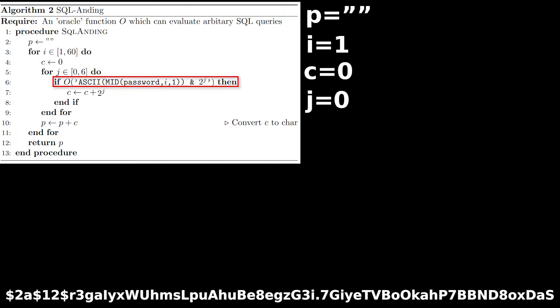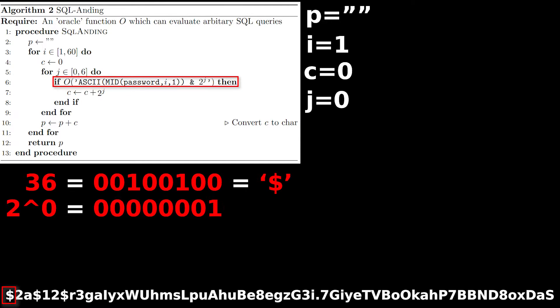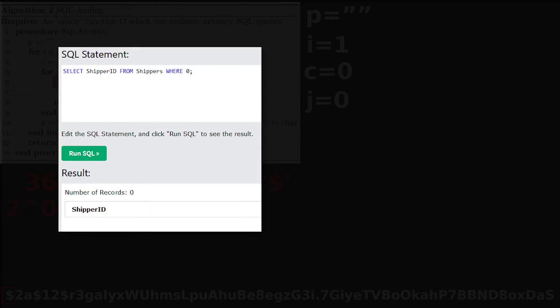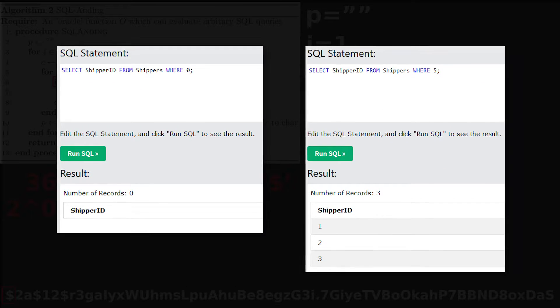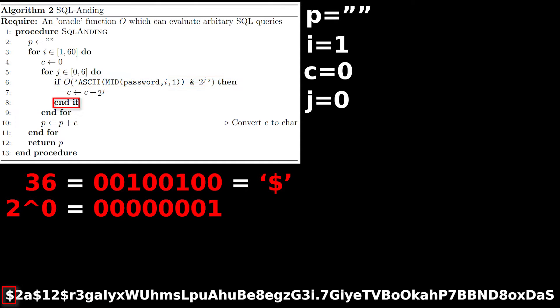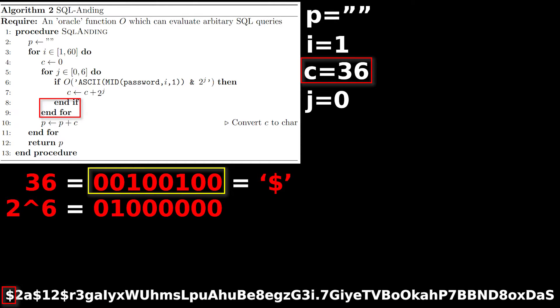We ask the server, is the ASCII value of the first character of password, bitwise and, 2 to the power of 0, true or false? This question might not make a lot of sense at first until you realize SQL treats 0 as false and any other number as true. So when the server tells us no, we understand that the least significant bit is a 0. This repeats for 2 to the power of 1, 2, 3, 4, 5, and 6, which results in us knowing the bits of our target character are 0, 1, 0, 0, 1, 0, 0, which is 36 in decimal, or a dollar sign.